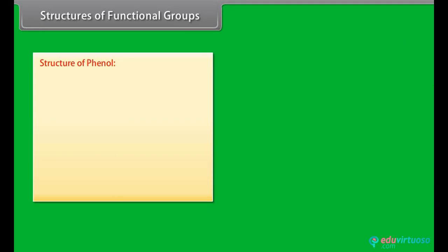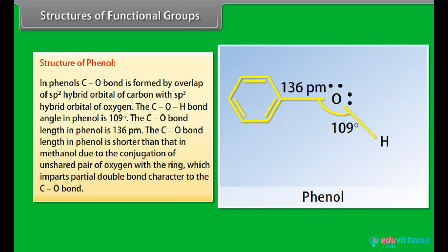Because of the high electronegativity of the oxygen atom, the C-O and O-H bonds are polar. Structure of phenol. In phenols, the C-O bond is formed by overlap of an sp2 hybrid orbital of carbon with the sp3 hybrid orbital of oxygen. The C-O-H bond angle in phenol is 109°. The C-O bond length in phenol is 136 picometers, which is shorter than that in methanol due to conjugation of the unshared pair of oxygen with the ring, imparting partial double bond character to the C-O bond.